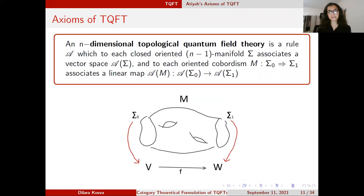Now we are ready to state Atiyah's axioms. There are five of them, and I will consider them one by one to make sense of what a TQFT means. An n-dimensional TQFT is a rule A. Given a cobordism from sigma₀ to sigma₁, A maps closed oriented (n−1)-manifolds — the boundaries — to vector spaces. In this case, sigma₀ is mapped to V and sigma₁ is mapped to W, and the cobordism between them is mapped to a linear map between these two vector spaces.